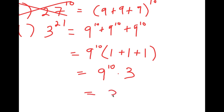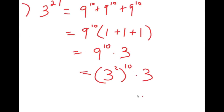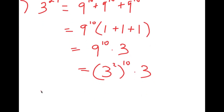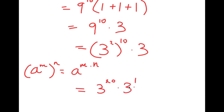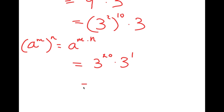Now this is equal to 3 squared to the power of 10 times 3. Using the property that a to the power of m to the power of n equals a to the power of m times n, we get 3 to the power of 20 times 3 to the power of 1. Simply adding the exponents, this is equal to 3 to the power of 21.